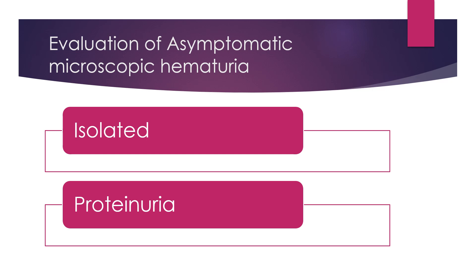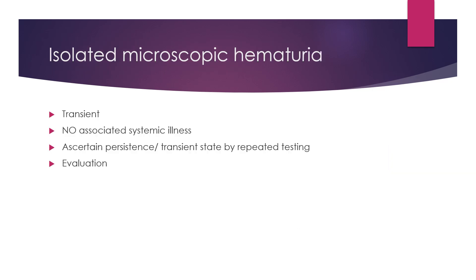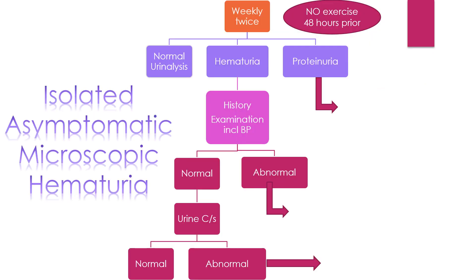The tricky case is asymptomatic microscopic hematuria found incidentally. This opens a Pandora's box — you need to evaluate to reassure yourself and the parents. Divide it into isolated microscopic hematuria versus hematuria with proteinuria, as the evaluation differs. Isolated microscopic hematuria is usually transient with no associated systemic disorders, but you need to rule out systemic illness before reassuring parents. Do repeated testing — urine analysis twice weekly for two weeks — and tell the child to avoid exercise 48 hours prior, as exercise can induce transient hematuria.